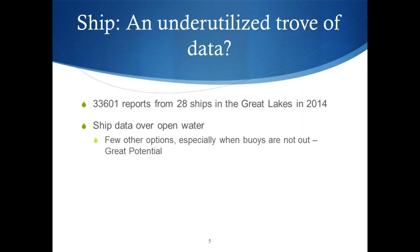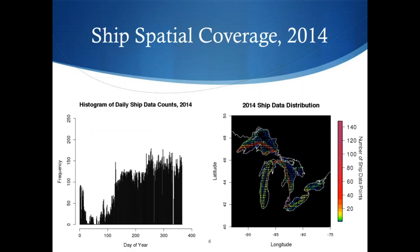That said, there's actually a lot of data out there. In 2014 alone, there were over 30,000 meteorological reports from 28 ships in the Great Lakes. What makes this really good data is that a lot of it's from open water locations. Over open water, our sources of observations are more limited to mainly buoys and satellite. Especially when the buoys aren't out, ships have the potential to fill that need. So we want to know: can we use it and should we be using it?